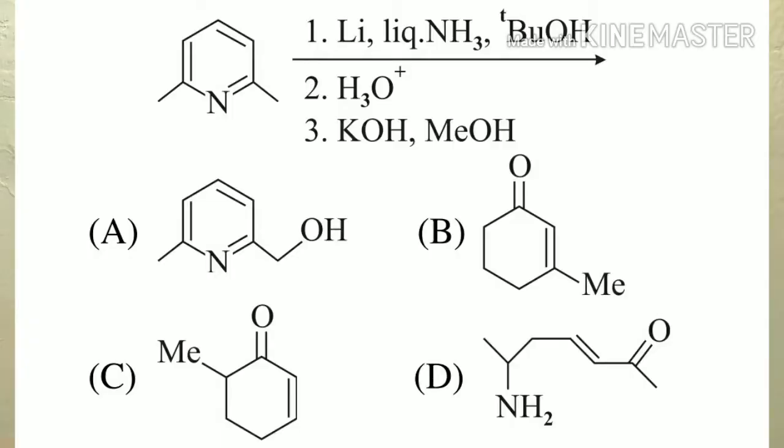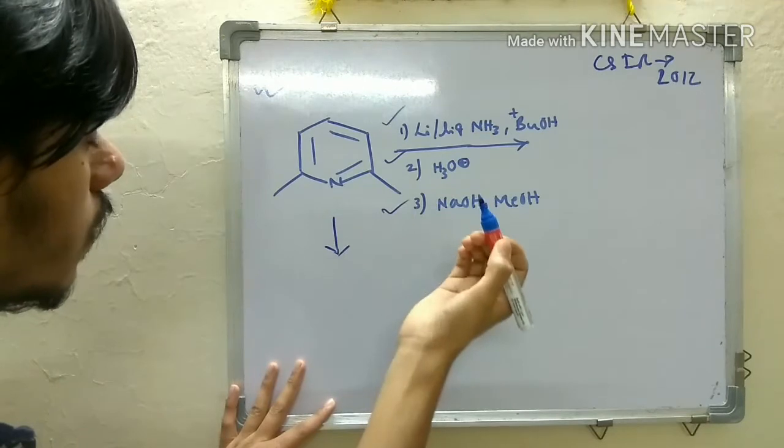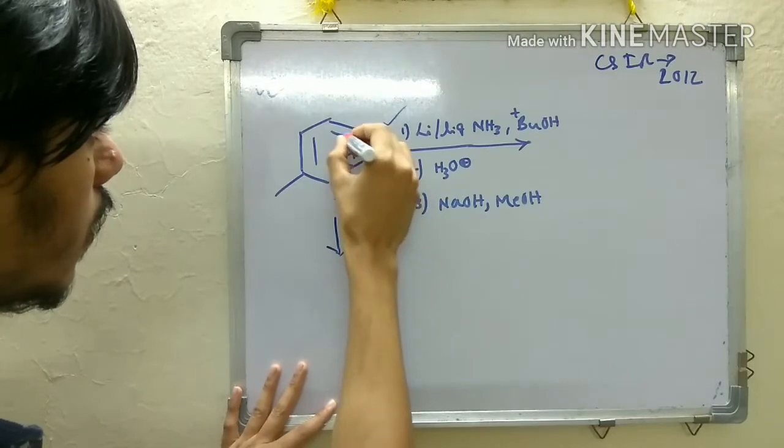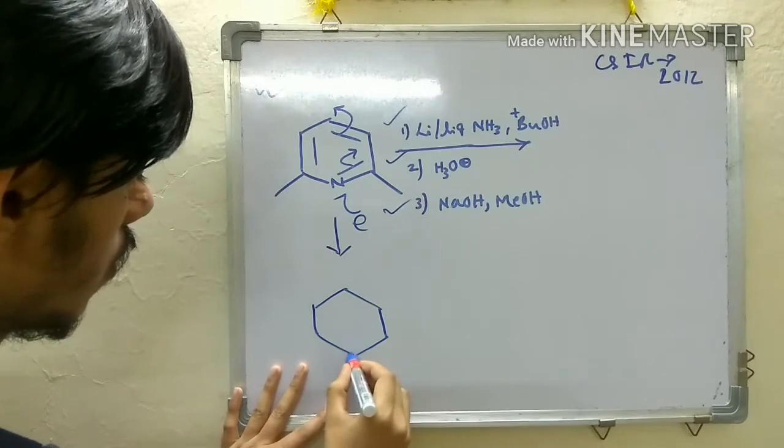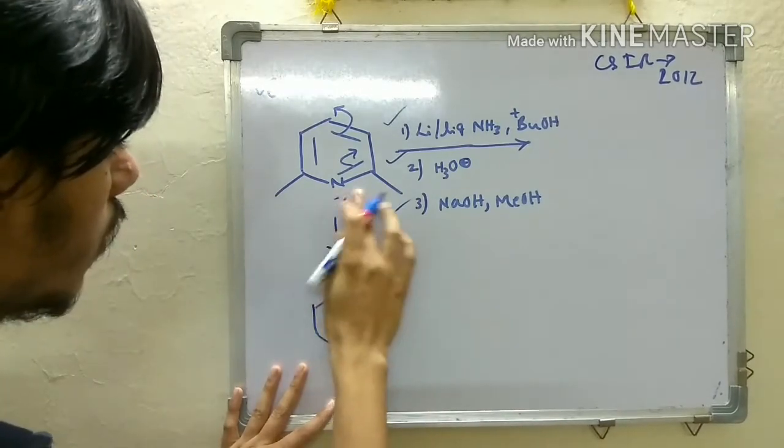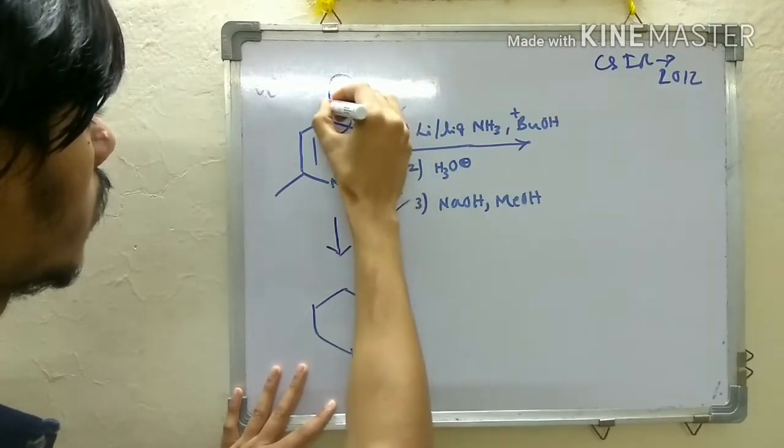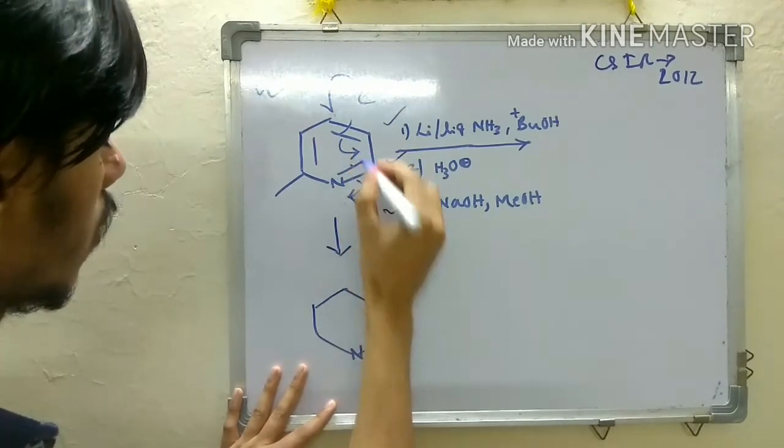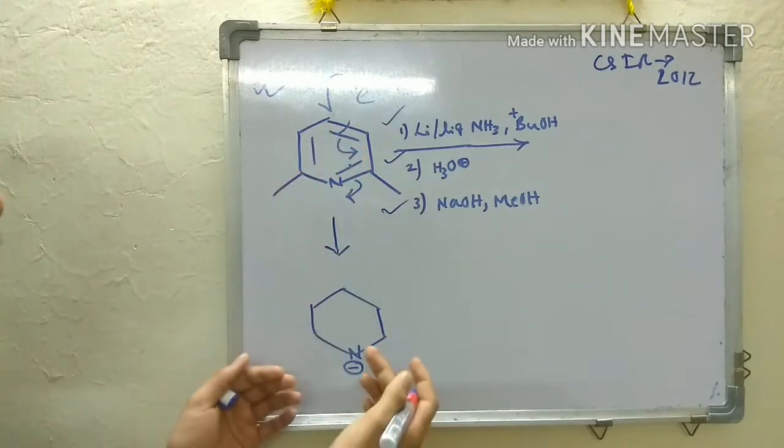If Birch reduction occurs, the radioselectivity will be that the electron adds here first. I should write it like this because the negative charge is stabilized on nitrogen, not on carbon - more stable on nitrogen.